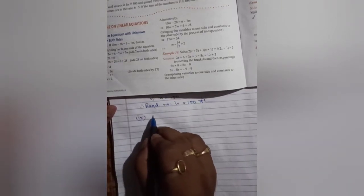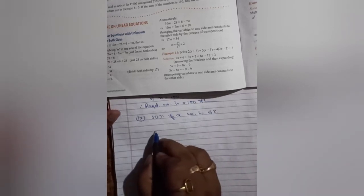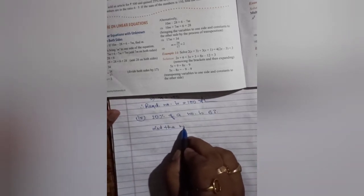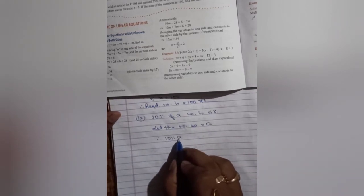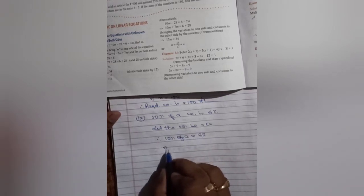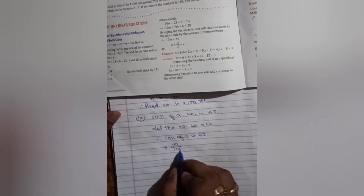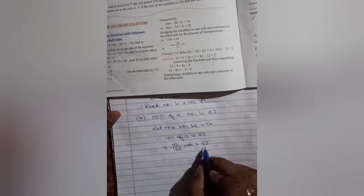Now let us do question number 9. 10% of a number is 63. 10% of a is equal to 63. 10% means 10 by 100 into a is equal to 63.